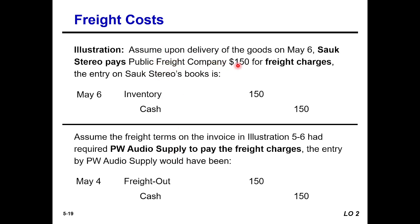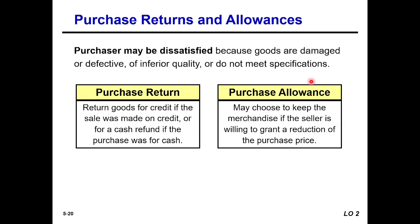Purchase returns and allowances: a purchaser may be dissatisfied because goods are damaged, defective, of inferior quality, or do not meet specifications. In this case, the buyer can return the goods to the seller. The purchaser can either return the goods for credit if the sale was on credit, or receive a cash refund if the purchase was for cash.